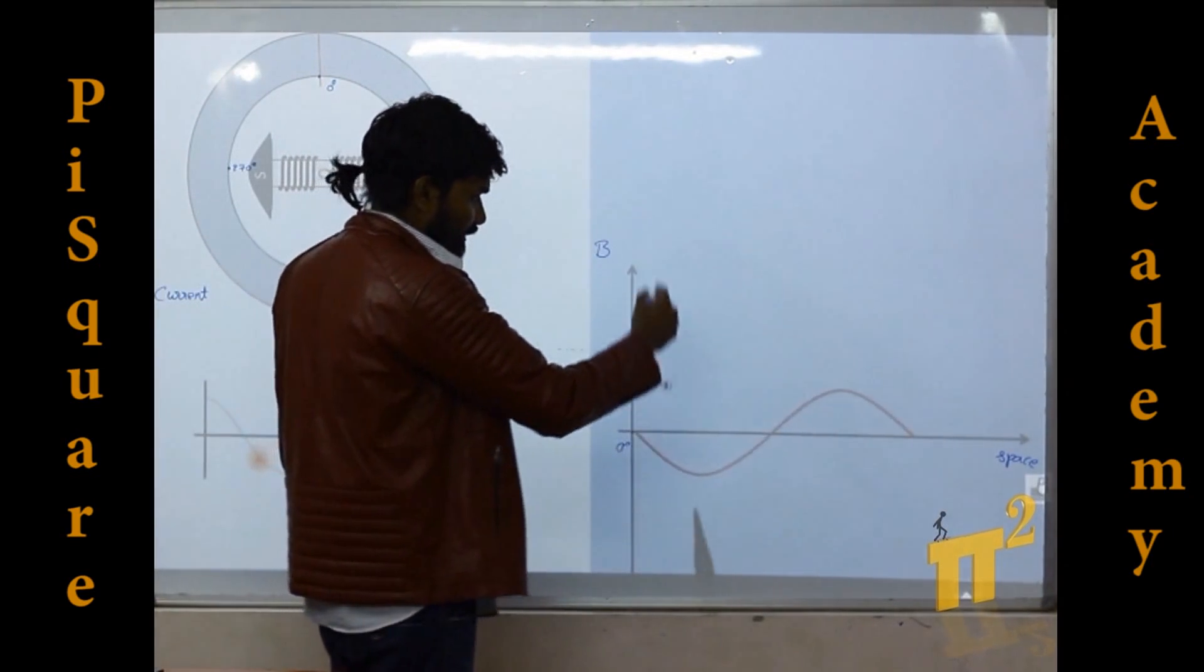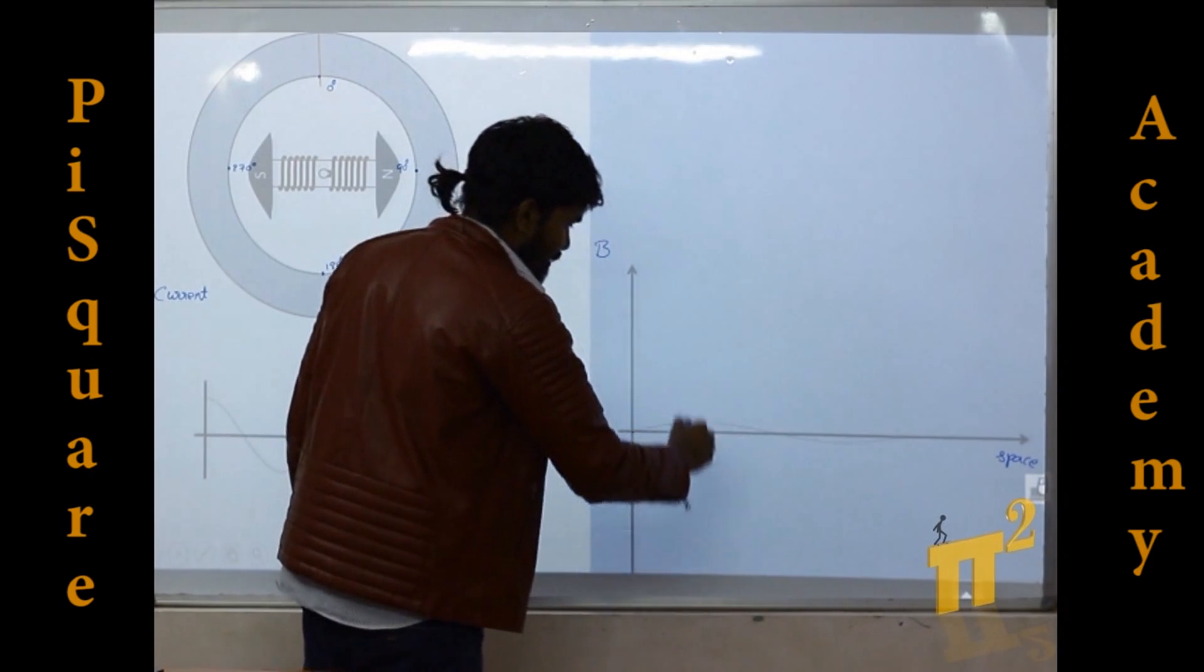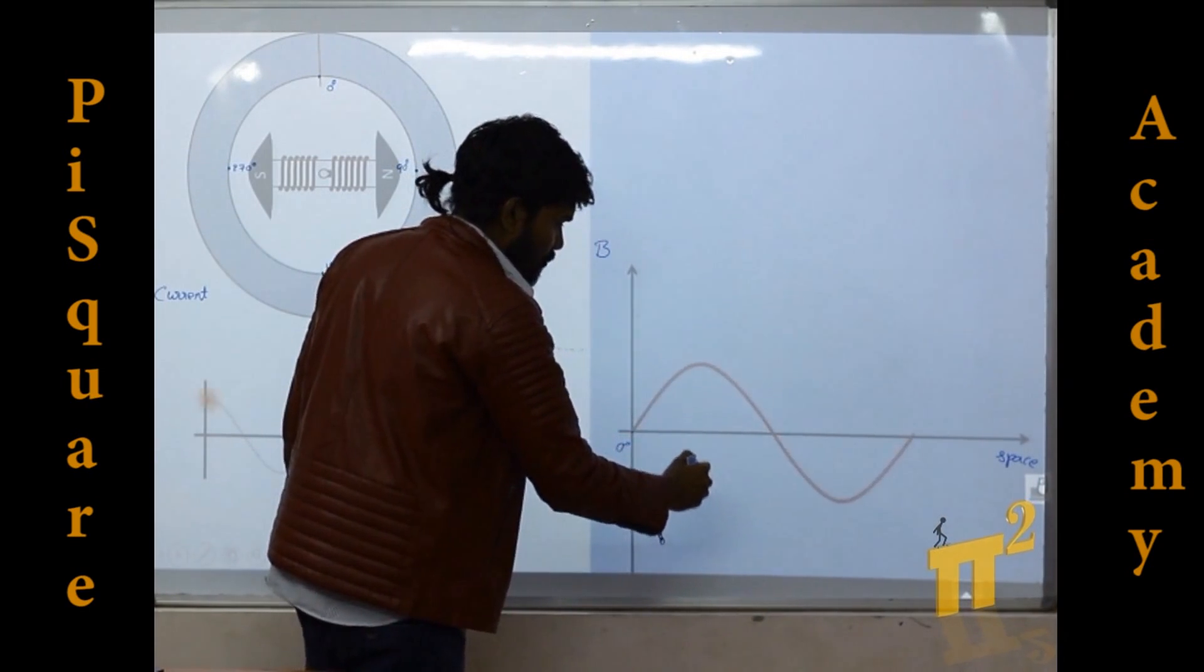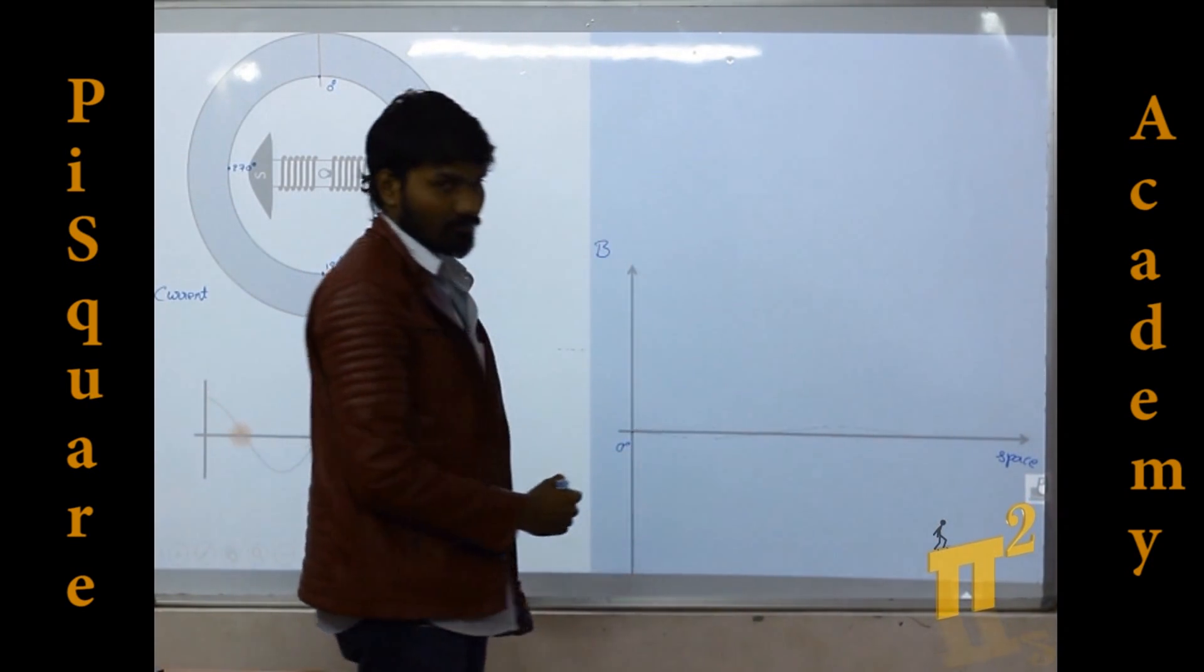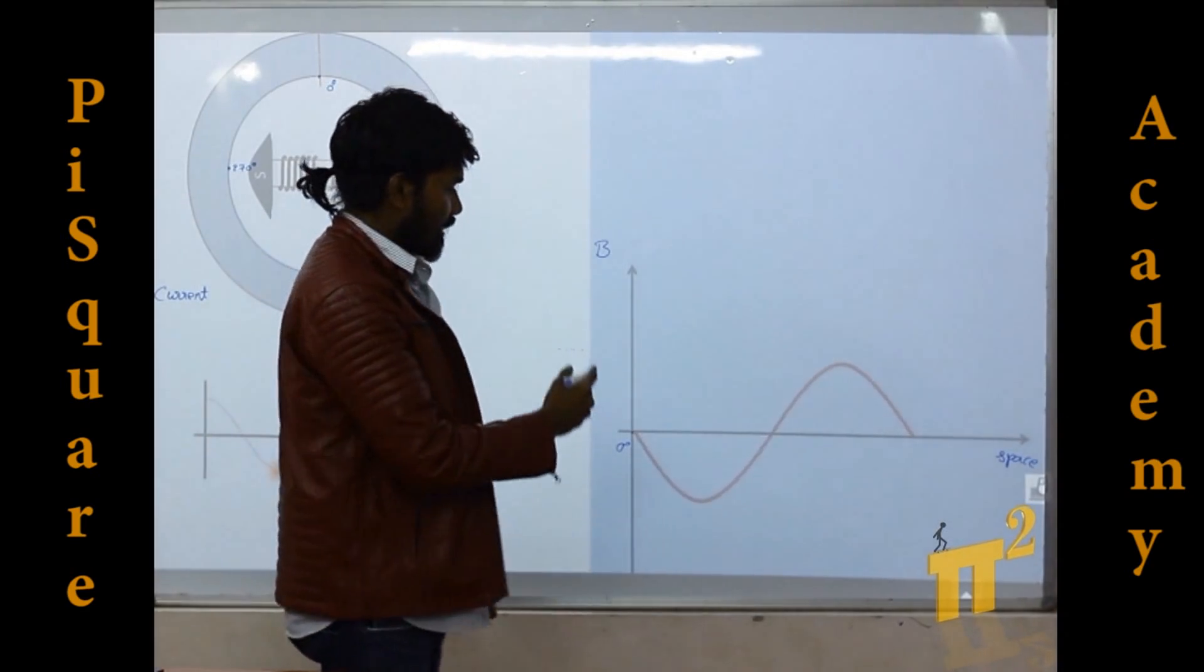It's pulsating, it's not moving, but it is just pulsating positive to negative, negative to positive. Hence it is called as standing pulsating wave.